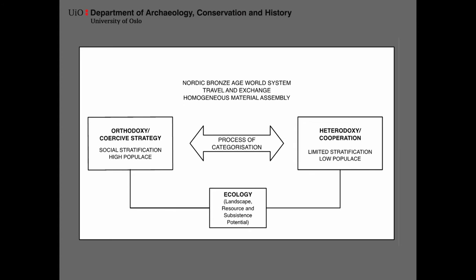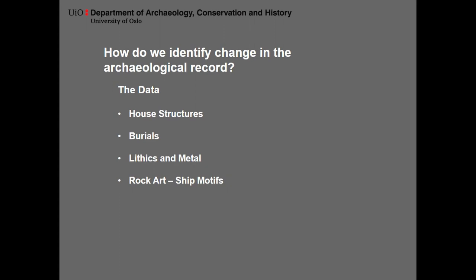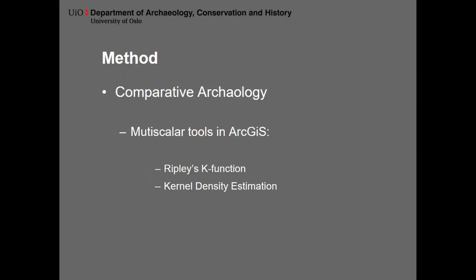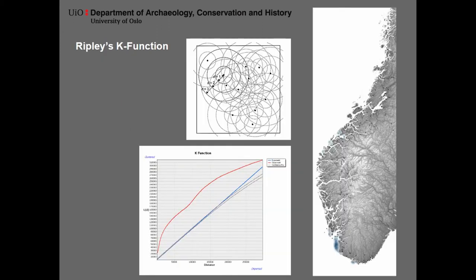How do we identify regional change within a large region that is, based on material assembly, quite similar? An extensive archaeological corpus consisting of settlements, burial patterns, lithics, metal, and rock art were incorporated to identify patterns of diachronic, regional, and societal differences. Working with such a large body of data requires a way to systematize it, and here a combination of Ripley's k function and kernel density estimation in ArcGIS has proven quite fruitful. The Ripley's k function calculates different point data multiple times from different distance spans, giving statistically significant clusters of the different finding categories.